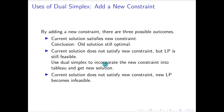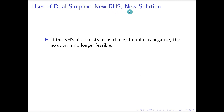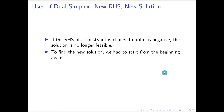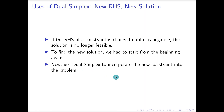In this video we're going to finish off section 6.11. In the last video we talked about the dual simplex method and looked at an example where we added a new constraint. Now we're going to look at the case where we have a new right-hand side and we're trying to find the new solution. If the right-hand side becomes negative, the solution is no longer feasible, and we want to use the dual simplex method to incorporate that new constraint.